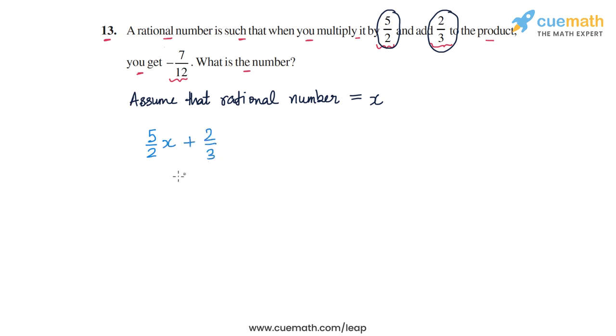So we add 2/3 and then after this step we get -7/12. So this expression in x should be equal to -7/12 and this is how we can get an equation in x in this case.